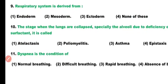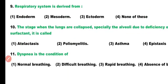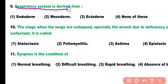Question number 9. The respiratory system is derived from: endoderm, mesoderm, ectoderm, or none of these. Correct answer is option 1. The respiratory system is endodermal in origin.